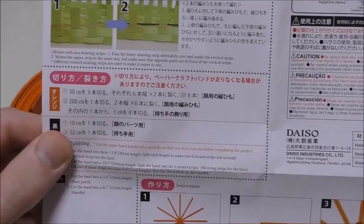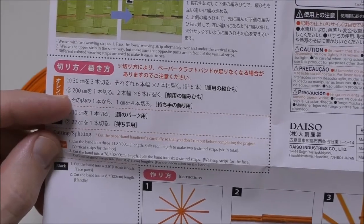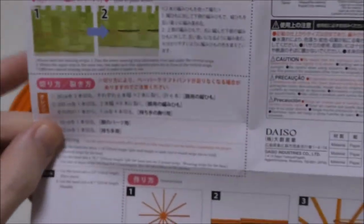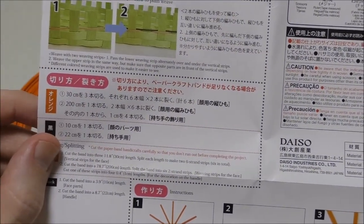According to this the first thing you need to do is to cut the orange bit because that's the main piece and the black is just used to make the face. And the orange one, first thing we need to do is cut three 30cm lengths.